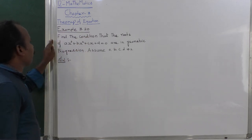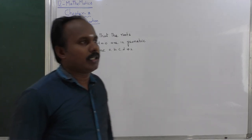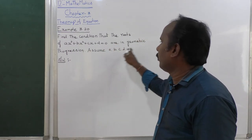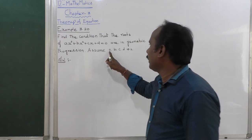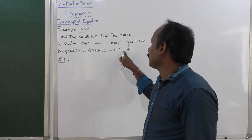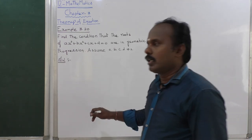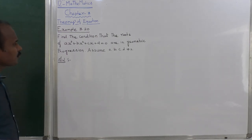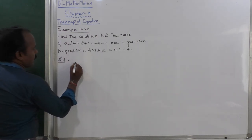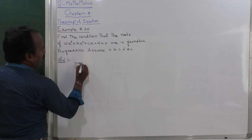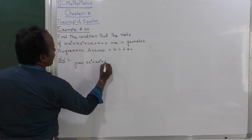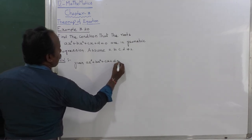Example 3.20: Find the condition that the roots of Ax³ + Bx² + Cx + D = 0 are in geometric progression. Assume that A, B, C, D are not equal to 0. The given equation is Ax³ + Bx² + Cx + D = 0.